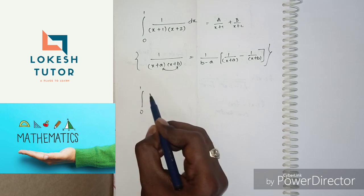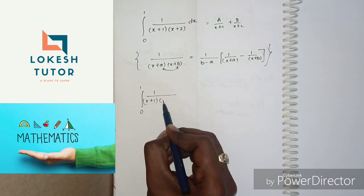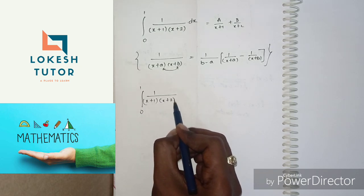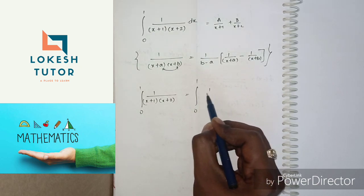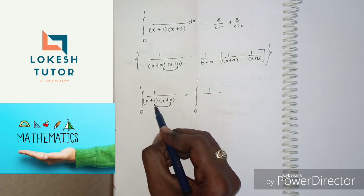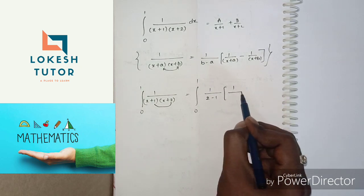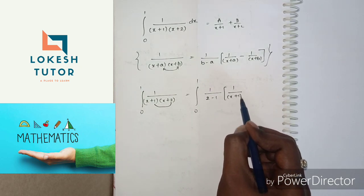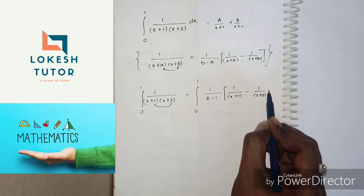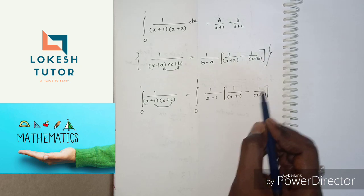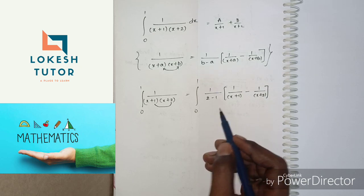Integral 0 to 1, 1 by (x plus 1) into (x plus 2) can be written as integral 0 to 1, 1 by (2 minus 1) into 1 by (x plus 1) minus 1 by (x plus 2). So, 1 by (2 minus 1) equals 1 by 1, which is 1.